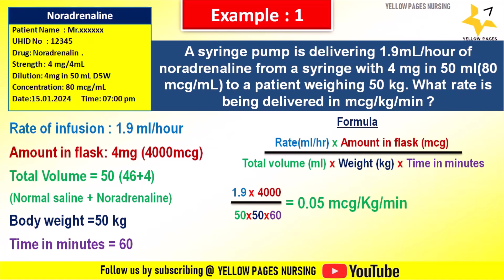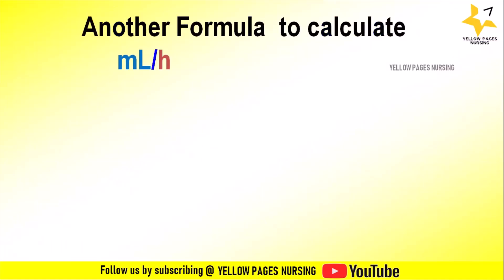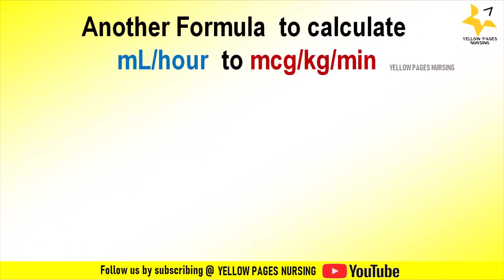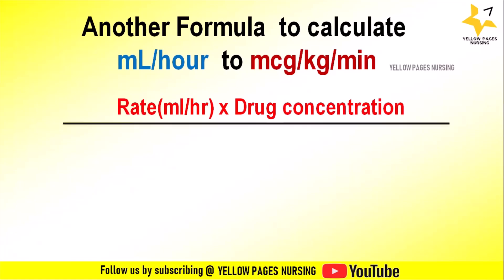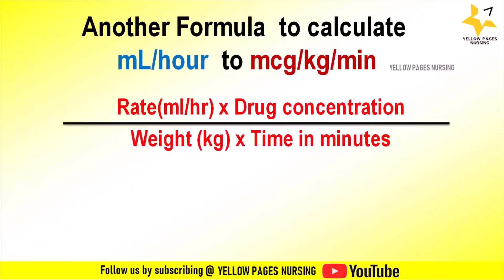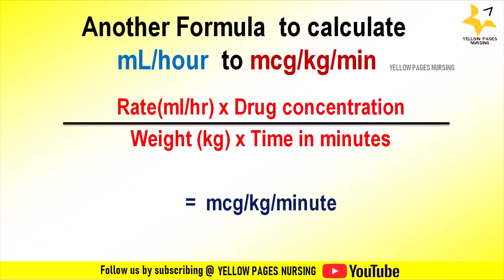Now, another formula to calculate ml per hour to mcg per kg per minute is: rate (ml/hr) × drug concentration (mcg/ml) ÷ weight (kg) ÷ time (minutes), which gives mcg per kg per minute.